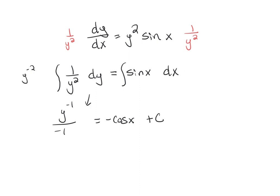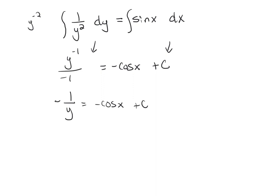I only put the plus c on the right side. Rewriting: negative 1 over y equals negative cosine x plus c. Multiplying both sides by negative 1, we get 1 over y equals positive cosine x plus c — the sign on c doesn't need to change since it's still an arbitrary constant. So y equals 1 over cosine of x plus c.